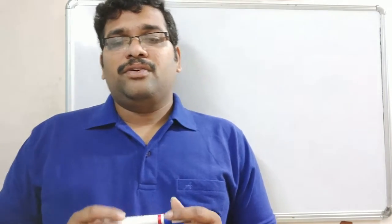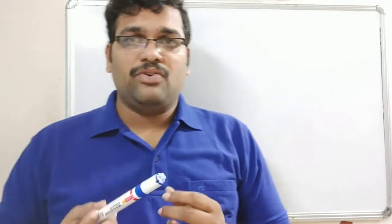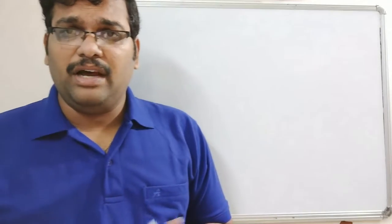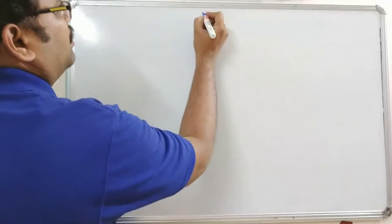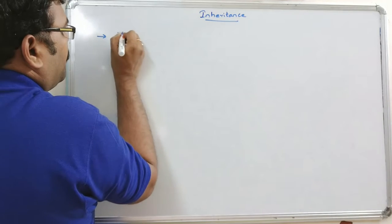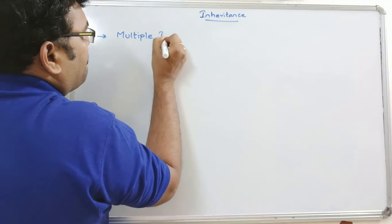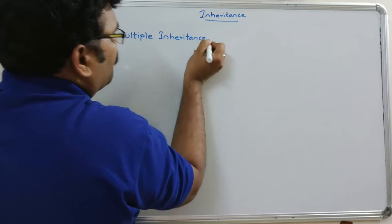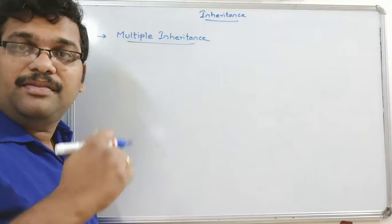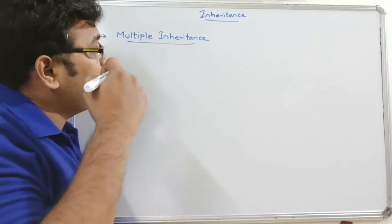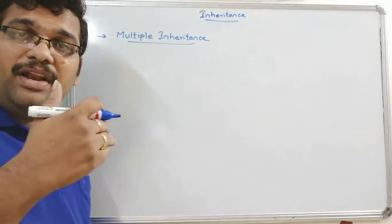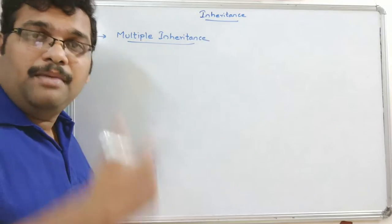Hello friends, welcome back to our channel. In the previous session we covered the inheritance concept, including single inheritance and multi-level inheritance. In single inheritance there is one derived class and one base class. In multi-level inheritance there are three classes: grandparent, parent, and child, where parent acquires properties from grandparent and child acquires properties from parent.